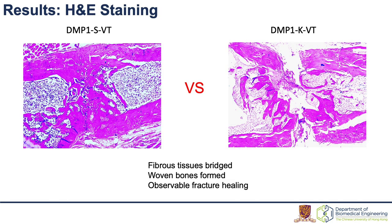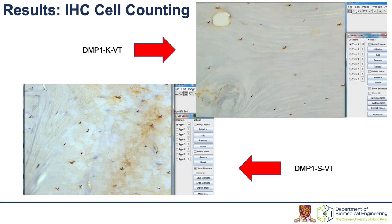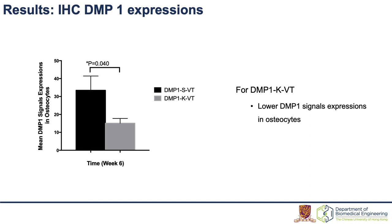In the results of H&E staining, observable fracture healing was noticed in DMP1 scramble, with more fibrous tissue bridged and more woven bone formed, but less in DMP1 knockdown. It is easily seen that the number of brown dots was relatively less in DMP1 knockdown, and DMP1 signal expressions in osteocytes were found significantly lower in the DMP1 knockdown group.